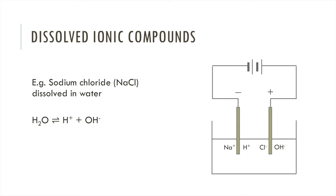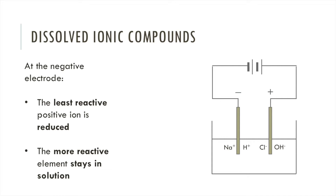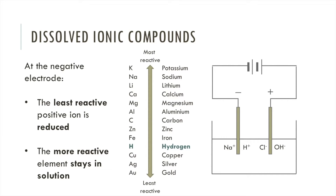The positive ions are attracted to the negative electrode and the negative ions are attracted to the positive electrode, but we have some choices to make. We need to know a few rules to determine which ions are going to be reduced and which are going to be oxidised. At the negative electrode, the least reactive positive ion is reduced, meaning the more reactive element stays in solution — so we need to know the reactivity series. Hydrogen is less reactive than sodium, so what forms at the negative electrode is hydrogen gas and the sodium stays in solution. In fact, it's only copper, silver and gold that will form at that electrode if it's not hydrogen.